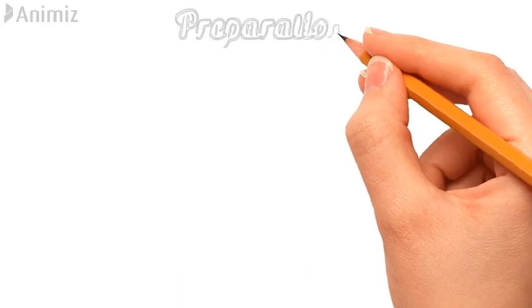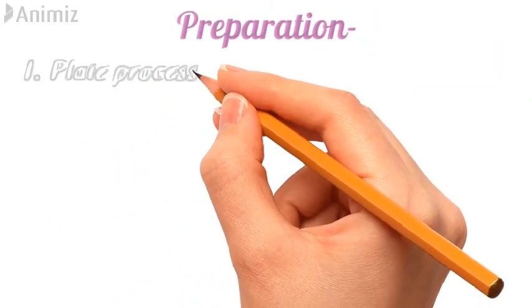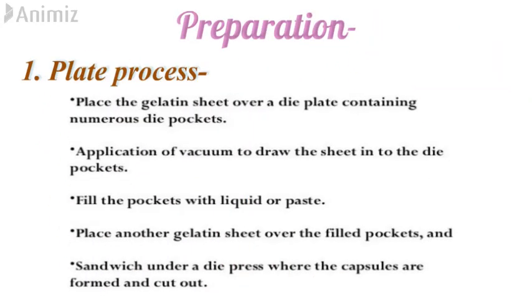Now let's see different preparation techniques of soft gelatin capsules. The first technique is the plate process, in which we place a gelatin sheet over a die plate containing numerous die pockets, then apply vacuum to draw the sheets into the die pockets, fill the pockets with the liquid or paste containing the drug, place another gelatin sheet over the filled pockets, and sandwich under the die press where the capsules are formed and then cut out.